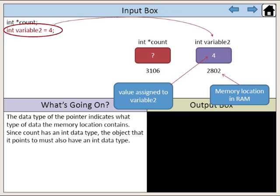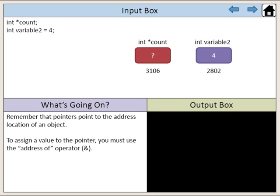Here we've declared the variable named variable2 with an int data type and assigned it the value of 4. Address 2802 has been allocated as the memory location in RAM that will store the value. Remember that pointers point to the address location of an object. To assign a value to the pointer, you must use the address of operator. Here we've assigned the address of variable2 to our pointer count.